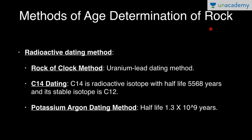Now, methods of age determination of rock — how we determine the age of fossils. Since fossils are present in rocks, we determine the age of the rock to determine the age of the fossil. First is the radioactive dating method. The rock-clock method uses uranium and lead — uranium-lead dating. Second is carbon-14 dating: carbon-14 is a radioactive isotope with a half-life of 5,568 years, and its stable isotope is carbon-12. Third is potassium-argon dating, with a half-life of 1.3 × 10⁹ years.